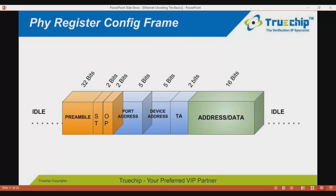The port address is a 5-bit field indicating the PHY port number on which the operation is to be performed. The device address indicates which PHY sublayer to communicate with. The TA (turnaround) is a 2-bit time spacing between the address and data fields of a management frame to avoid contention during a read transaction. The address or data field contains the address or data information pertaining to the operation.